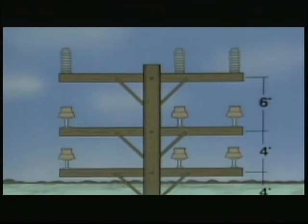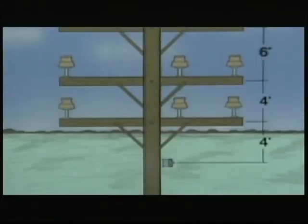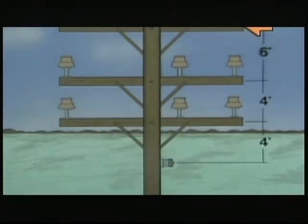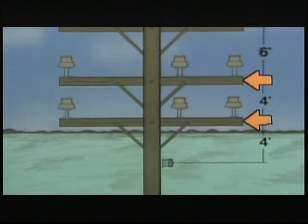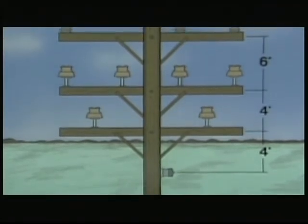Many poles carry more complex circuit arrangements. Using a simplified illustration, on this pole the sub-transmission circuit is here and one primary circuit is here. A good way to distinguish between circuits of different voltage levels is to check the spacing between them. In this system, sub-transmissions are six feet from the primaries, the primaries are four feet apart, and the bottom primary is four feet from the neutral.